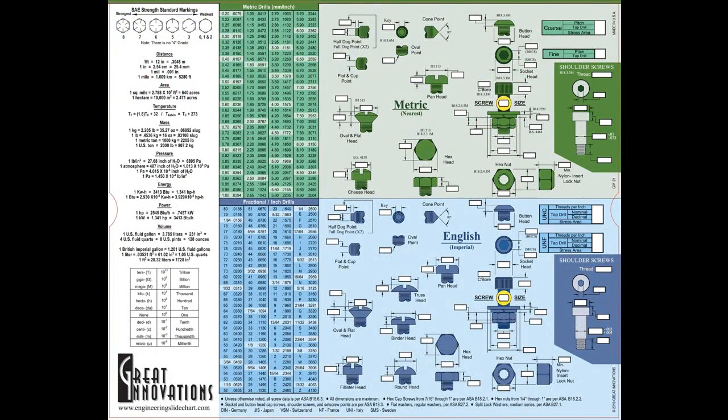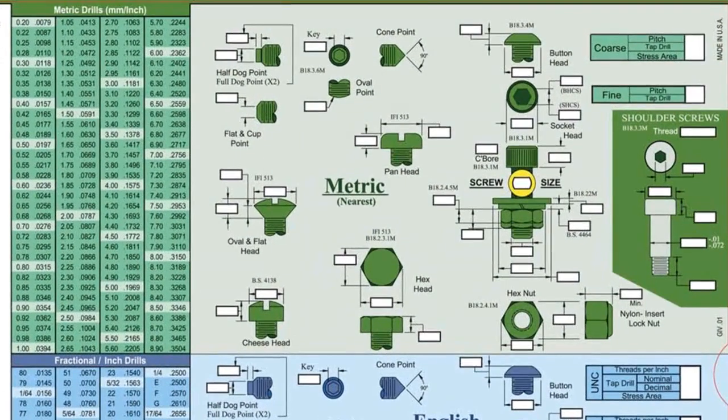The front of the chart contains information for screws, nuts, bolts, and washers. At the top of the chart, metric fasteners ranging in size from 1.6 mm to 24 mm are highlighted in green.